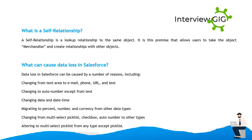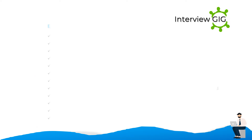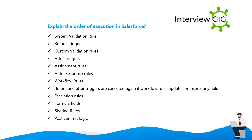Additional data loss causes include: changing from Multi-Select Picklist or Checkbox or Auto Number to other types, and altering to Multi-Select Picklist from any type except Picklist. Explain the order of execution in Salesforce: system validation rules, before triggers, custom validation rules, after triggers, assignment rules, auto-response rules, workflow rules. Before and after triggers are executed again if workflow rules update or insert any field. Then come escalation rules, formula fields, sharing rules, and post-commit logic.